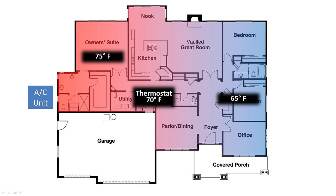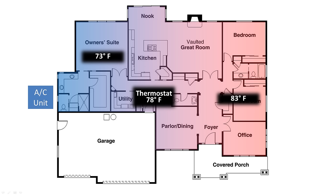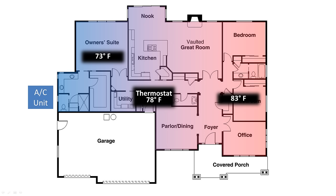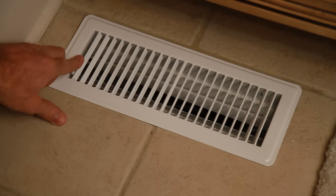Here's what I saw in my house. In the winter, I'd set my thermostat to 70 degrees, and the side of the house closest to the AC unit was about 75 degrees, while the opposite side of the house was 65 degrees. In the summer it was reversed — I'd set my thermostat to 78, and right by the AC unit those rooms would be 73 degrees, while the opposite end of the house would be 83.